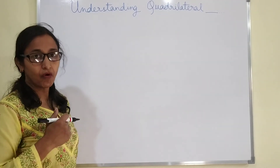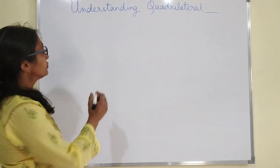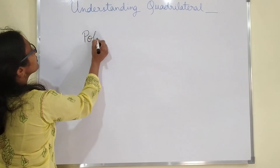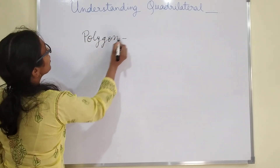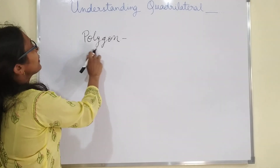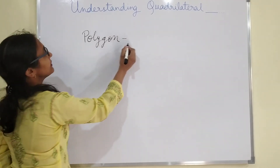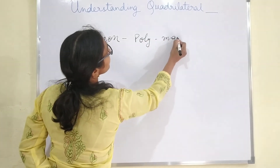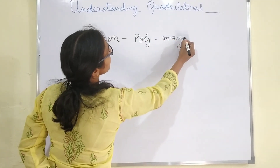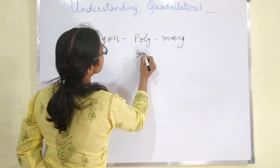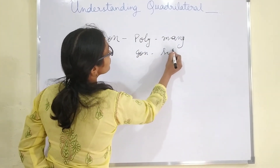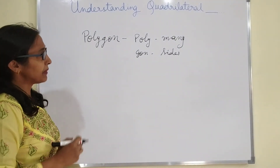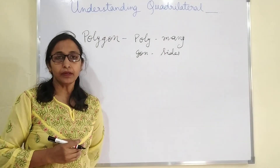So, here we start with what is a polygon. Polygon means — poly means many, gon means sides. So any figure which is having many sides is called a polygon.